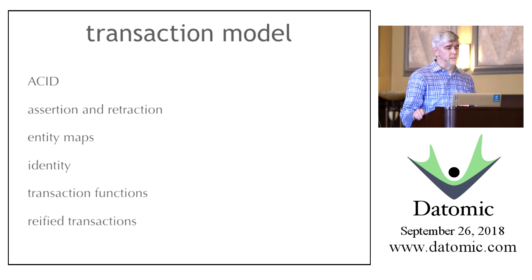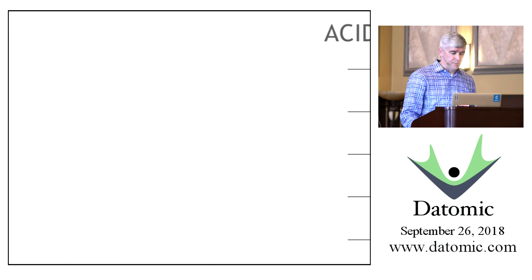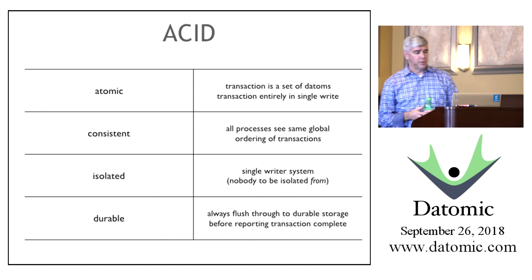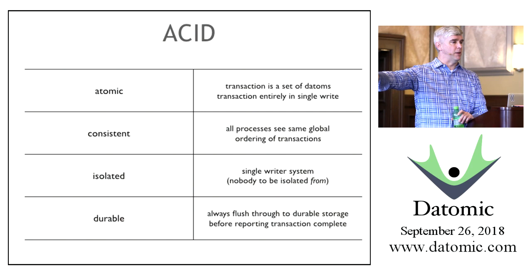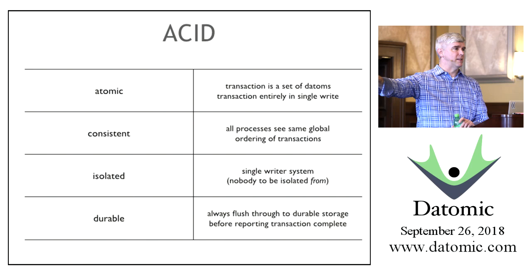Datomic's model for transactions is ACID — very traditional, like SQL databases. To drill into that: Atomic means in Datomic that a transaction is a set of datums. The Atomic property means that if you tried to put 41 datums into the database, one of two things can happen: either 41 datums get added to the database, or nothing gets added. There's no mode where 22 atoms get added.